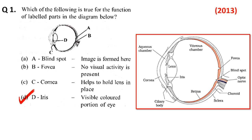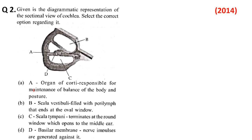Question number 2, 2014: Given is the diagrammatic representation of the sectional view of cochlea, select the correct option regarding it. यहाँ पे correct option देखना है। तो A denote कर रहा है organ of corti, B denote कर रहा है scala vestibuli, C is scala tympani, and D is the basilar membrane.